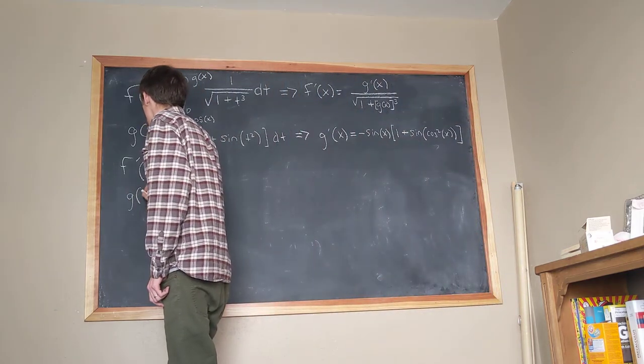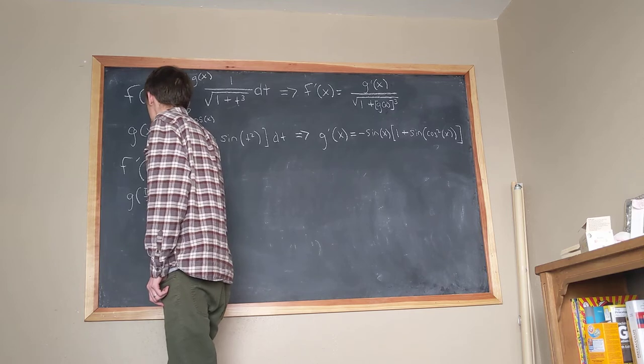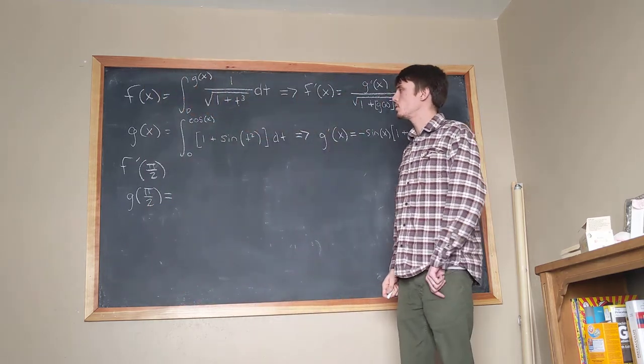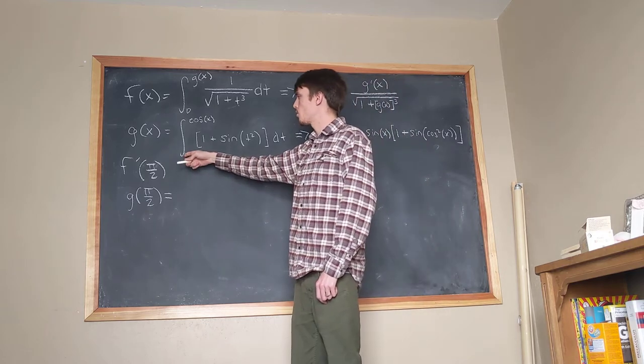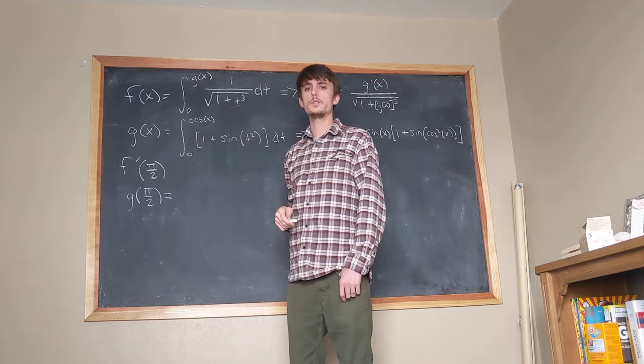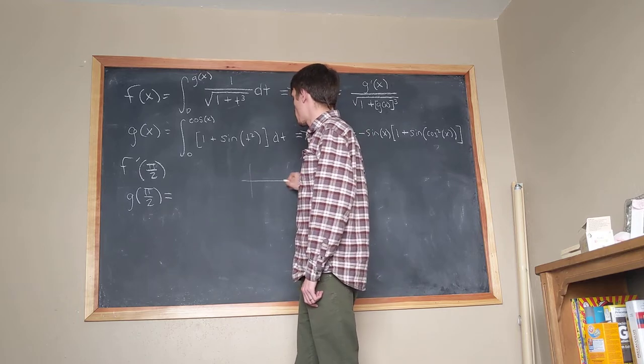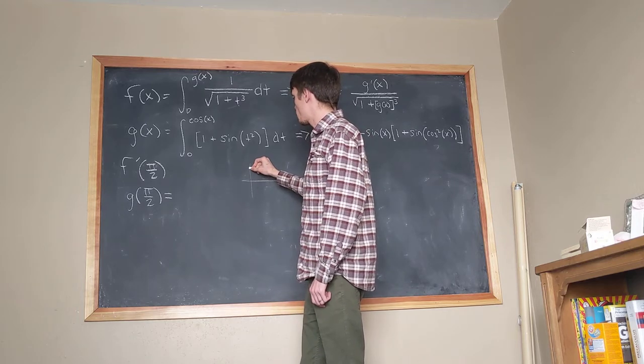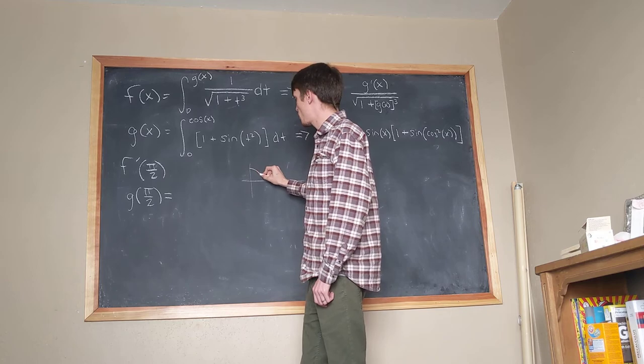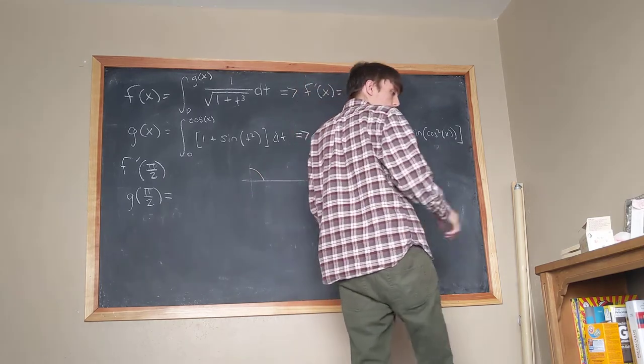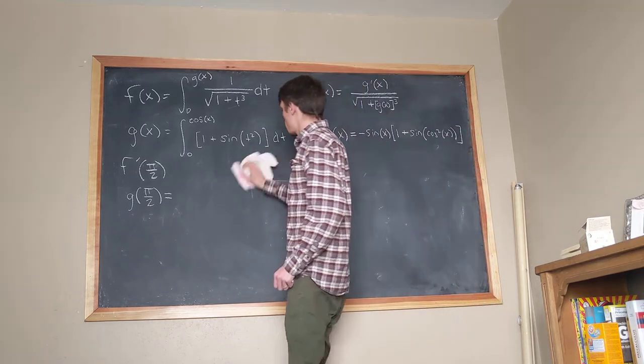So let's look at g of pi over 2 real quick. g of pi over 2 is equal to the integral from 0 to the cosine of pi over 2. What's cosine of pi over 2? Well, if you remember your cosine curve, right? Cosine of 0 is 1, and pi over 2 goes to 0. Okay, great. So, cosine of pi over 2 is equal to 0.